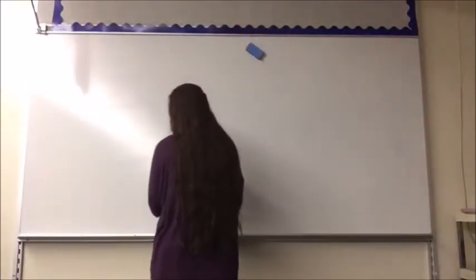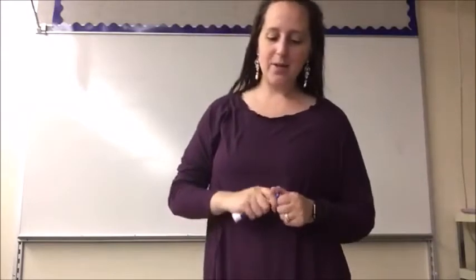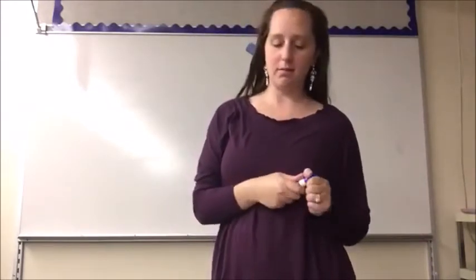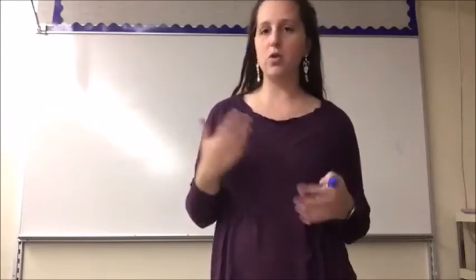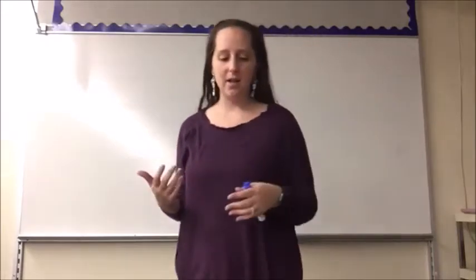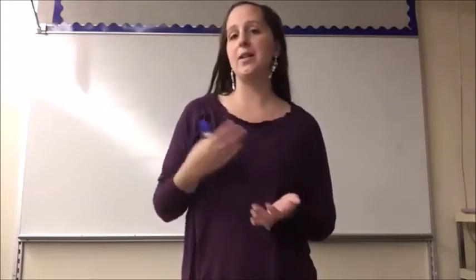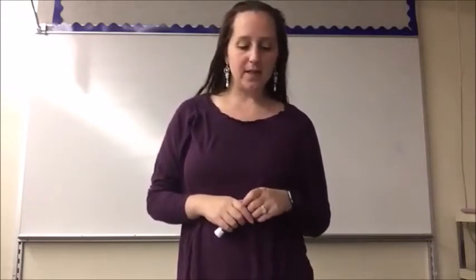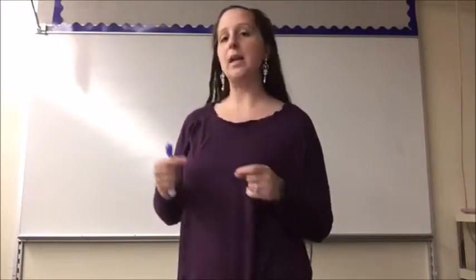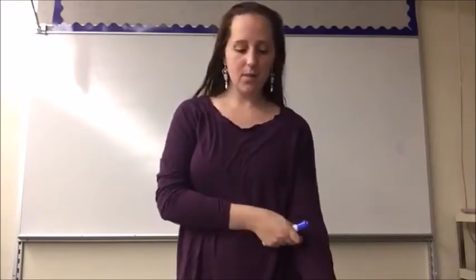Part A: 2.371732. That cannot be written as a fraction because the decimal does not repeat — you can see 3, 7, 1, 7, 3, 2 with no pattern — so it is irrational. Part B: 0.625 is a rational number; it terminates and can be written as the fraction five-eighths. Part C: 12.56637 has no repeating digits, so it is irrational.